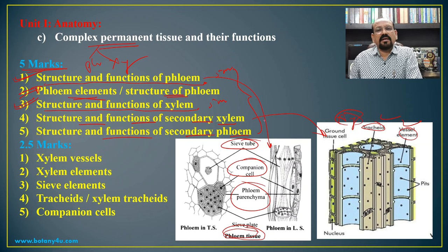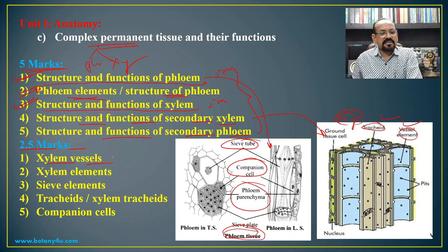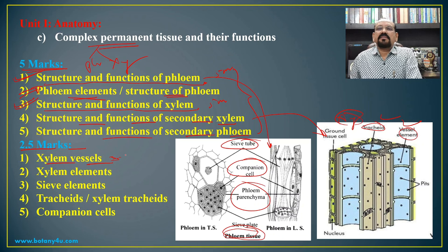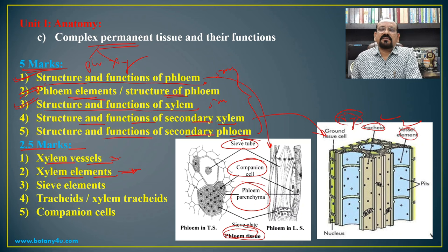For 2.5 mark questions on xylem vessels: xylem vessels are cylindrical structures placed one above the other by end-to-end connections. For xylem elements, provide the different components involved in xylem formation: xylem tracheids, xylem vessels, xylem parenchyma, and xylem fibers or wood fibers.